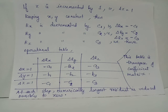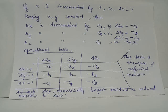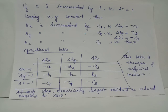Using this standard operational table and the residual formulas, we construct the relaxation table. At each step, the numerically largest residual is reduced, possibly to zero. When all residuals rx, ry, and rz are reduced to zero or nearly zero, we take the sum of all delta x values, all delta y values, and all delta z values to obtain the desired solution x, y, and z.